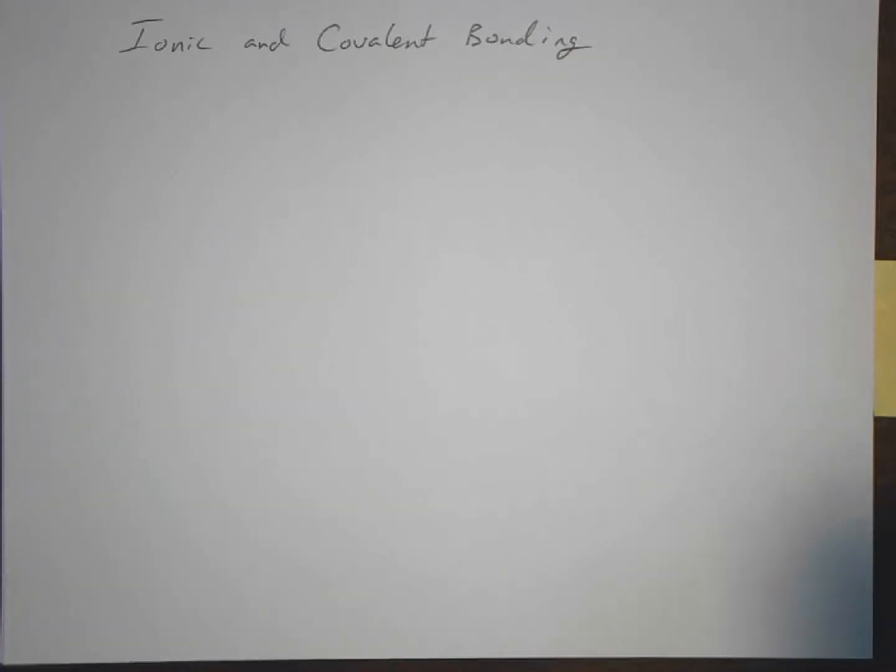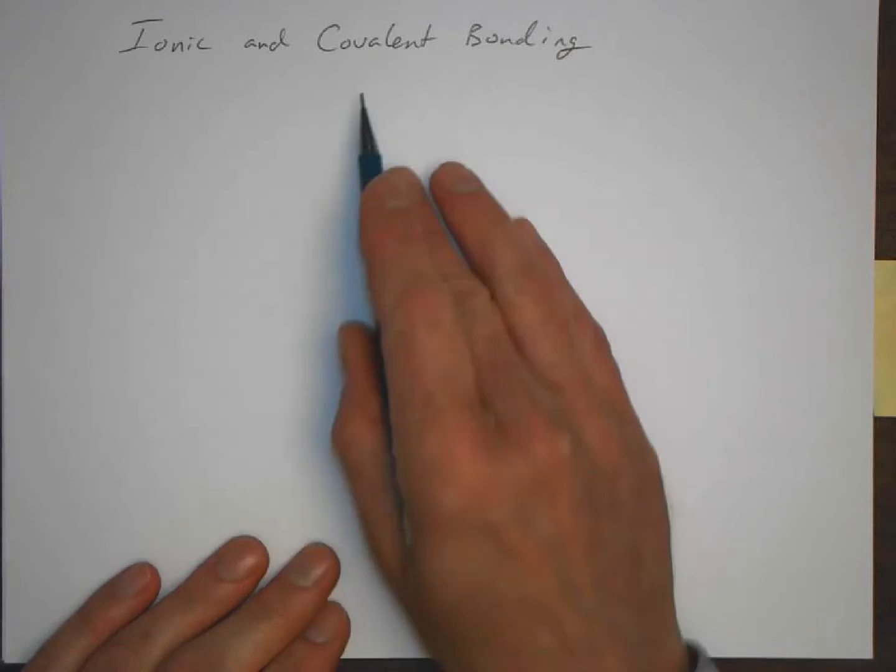This serves as the beginning of chapter 9, which looks at ionic and covalent bonding.